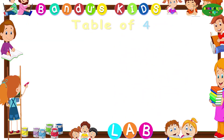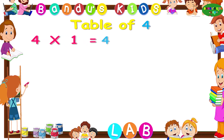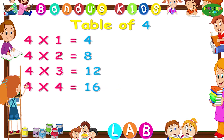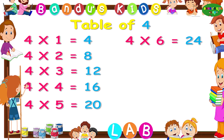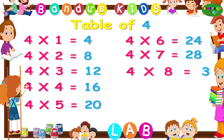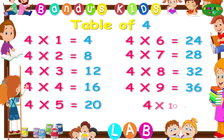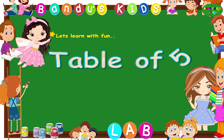Now let's revise the table of four one more time. Four ones are four. Four twos are eight. Four threes are twelve. Four fours are sixteen. Four fives are twenty. Four sixes are twenty-four. Four sevens are twenty-eight. Four eights are thirty-two. Four nines are thirty-six. Four tens are forty. Table of five.